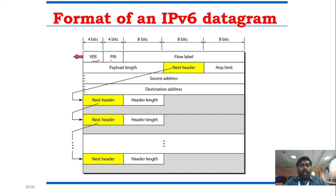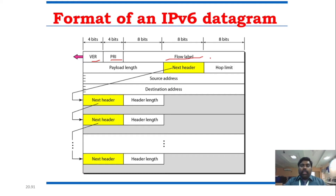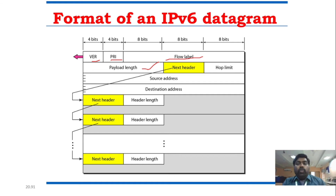Next is the priority field, which is essentially a traffic class or datagram priority — it indicates priority levels such as high priority or low priority, meaning data can be discarded or prioritized accordingly. Then there is the flow label field, which represents a specific flow of data in a particular flow label. And the payload length field indicates the length of the payload. Very importantly, IPv6 has a next header field.